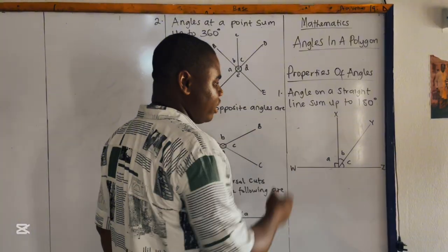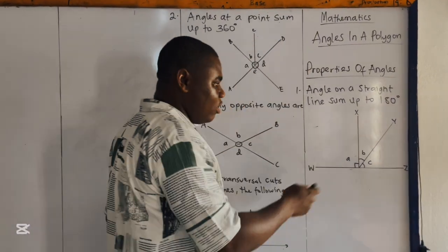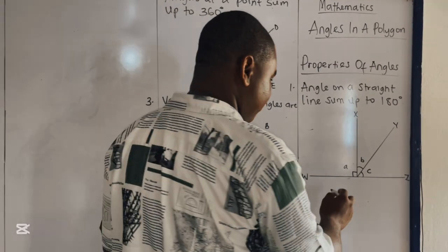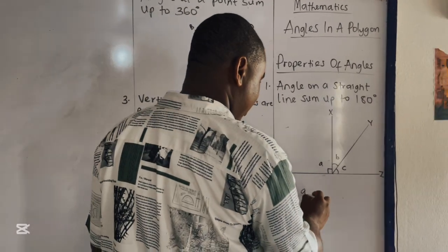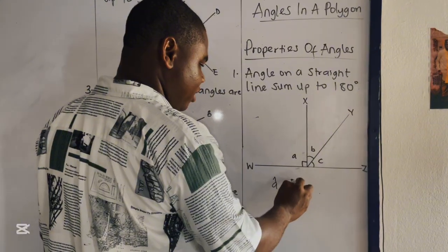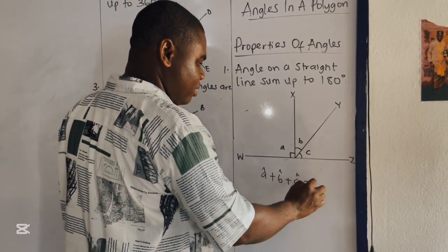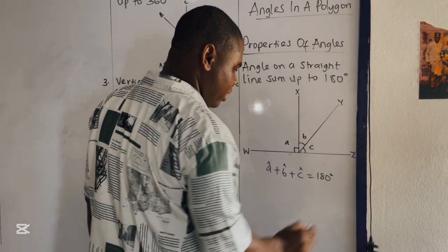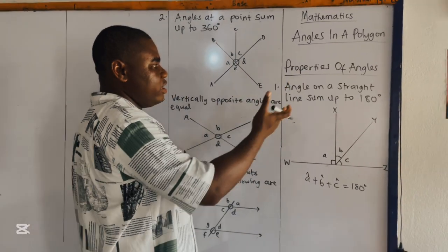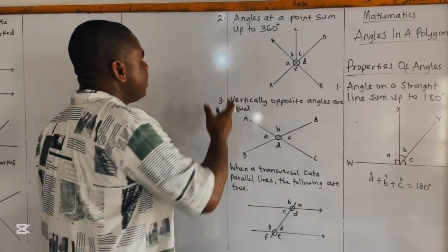An angle on a straight line sums up to 180 degrees. It therefore means that when you have a straight line, all the angles will sum up to 180 degrees. So we have angle A plus angle B plus angle C is equal to 180 degrees. Angles on a straight line sum up to 180 degrees.